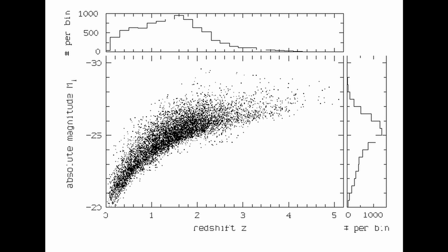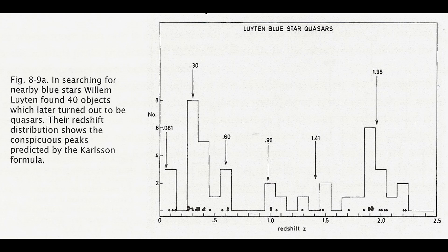Observations do indeed confirm this. In the 1940s and 50s Willem Luton measured blue stars looking for the large proper motions which would identify nearby blue dwarf stars. Many years later it would turn out that 40 of his stars were actually quasars.